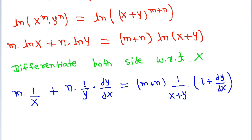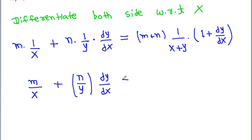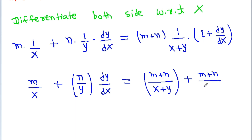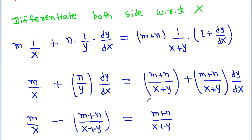So we get m by x plus n by y times dy by dx is equal to m plus n by x plus y plus m plus n by x plus y times dy by dx. Now if we separate dy by dx to one side, we get m by x minus m plus n by x plus y is equal to m plus n by x plus y minus n by y times dy by dx.